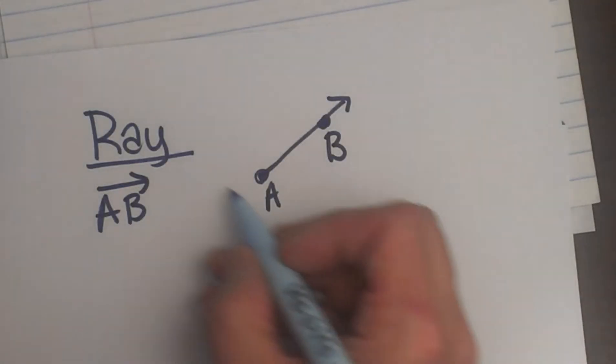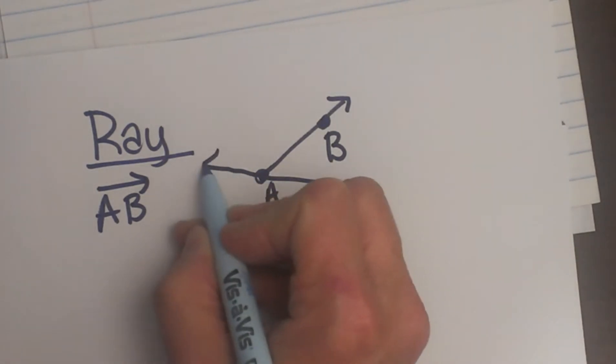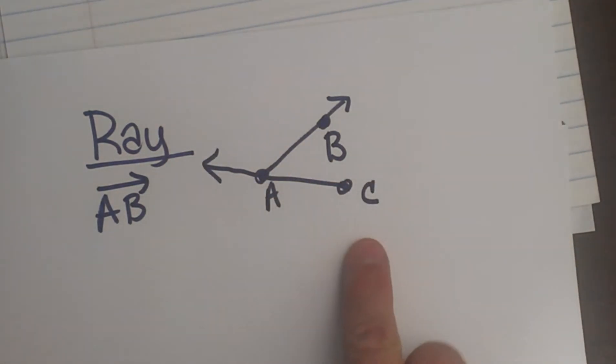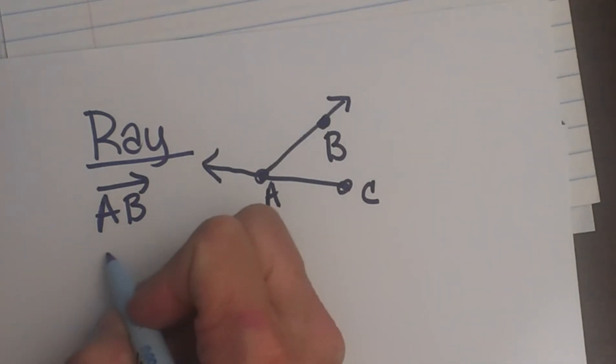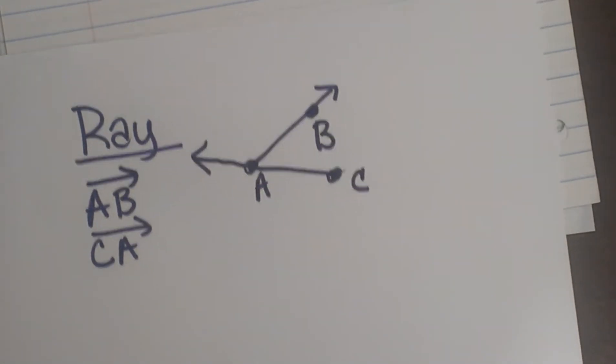Let's say I'm drawing another ray. I'm going to start over here at C and go through A. This time when I name that ray, I'm going to name it ray CA because my starting point is C, but it goes through A. That's how you name rays.